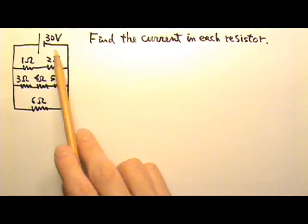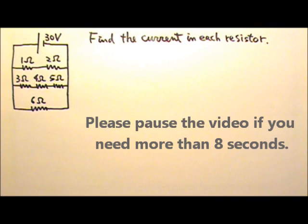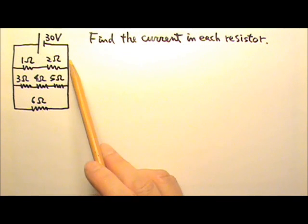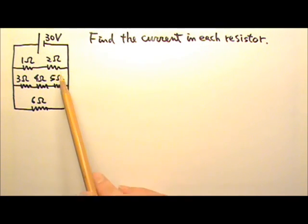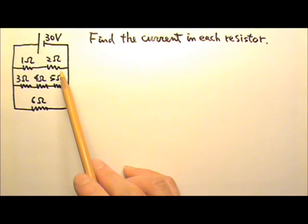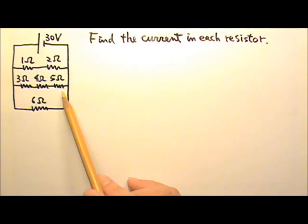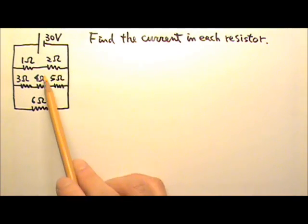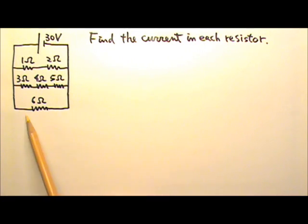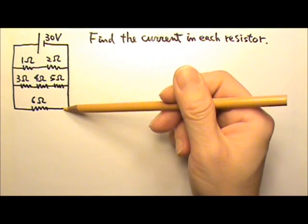Please find the current in each resistor. In this circuit, we have segments in parallel. Usually it's nice to deal with circuits like this, because when we have segments in parallel, we immediately know that each segment gets the same voltage. In this case, the same 30 volts — so each segment gets 30 volts. This means we can conveniently look at one segment at a time.